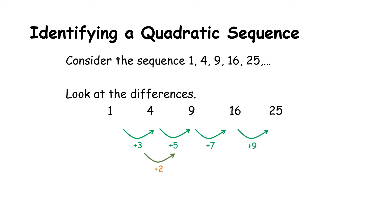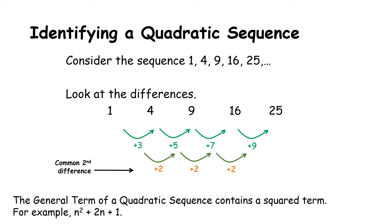So these are our first differences, but they are definitely not common. So we move into calculating our second differences, which are the differences of the differences. We see that we don't have a common first difference, but we do have a common second difference. And that common second difference is how we know that that sequence is a quadratic sequence.